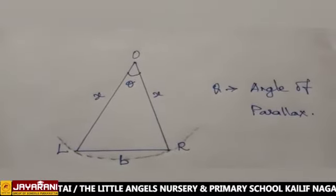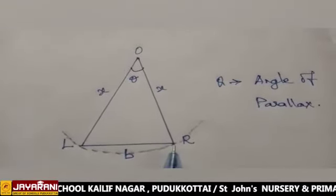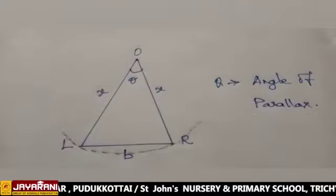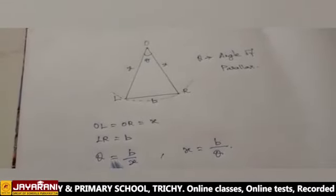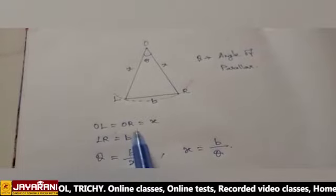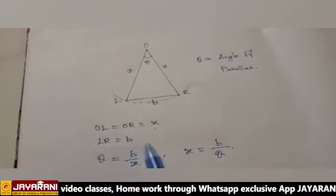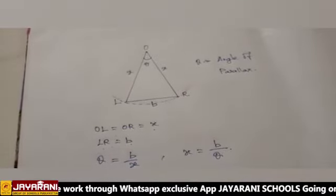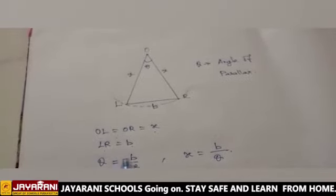For astronomical calculation, the distance LR can be treated as an arc. Then, OL is equal to OR is equal to X and LR is equal to B. These are getting from the diagram and here, theta is equal to B by X.